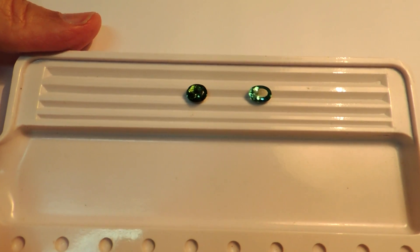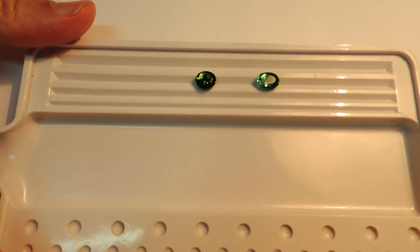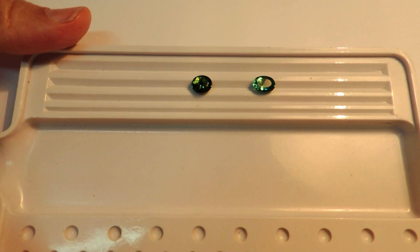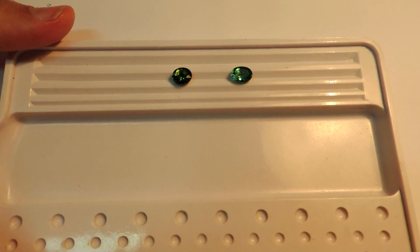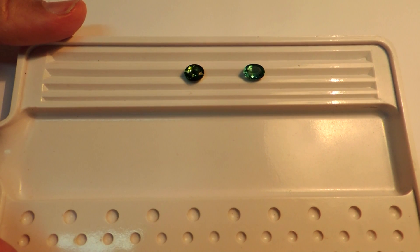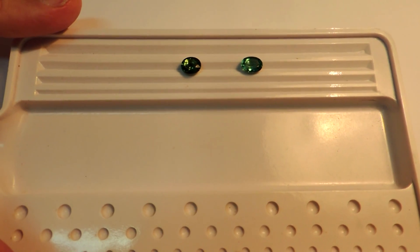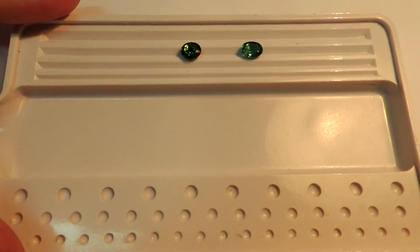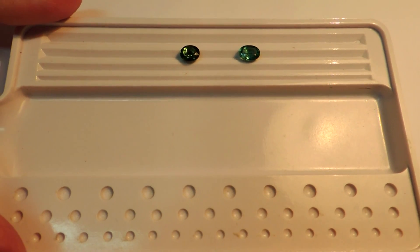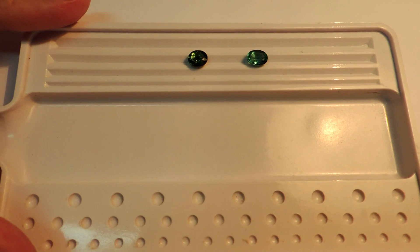As the stones move away from the 90 degree vertical, we see one of the stones darkening, or as we say, closing at a faster rate than the other, until it is black and opaque and without beauty.